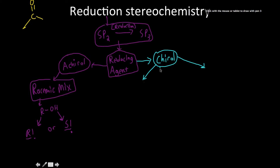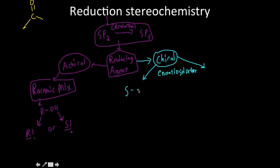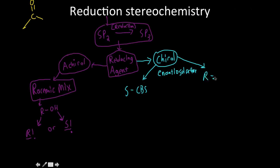What's more important is the chiral reducing agents, because that's going to give us some selectivity. Chiral reducing agents are enantioselective, which means they specify a specific enantiomer. There's SCBS and RCBS — these are the names of the molecules, obviously abbreviations.